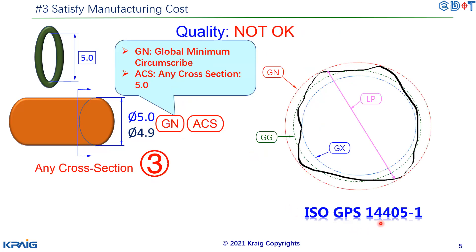So we try to specify the diameter of the cross-section instead. According to ISO GPS 14405-1, you can add 'GN' and 'ACS' to the specification. 'GN' stands for global minimum — 'G' means global (i.e., full length) and 'N' means minimum circumscribed diameter, shown as the red circle here. 'ACS' means any cross-section. Together, this means: at any cross-section, the external minimum circumscribed diameter must be within 5.0.